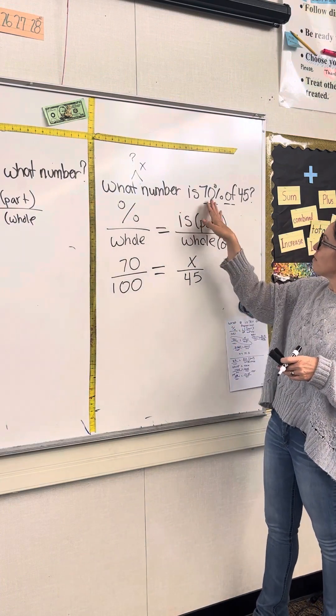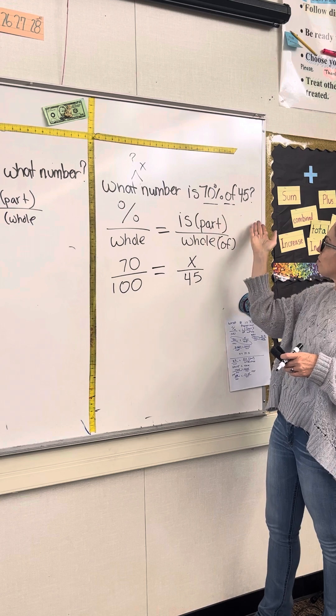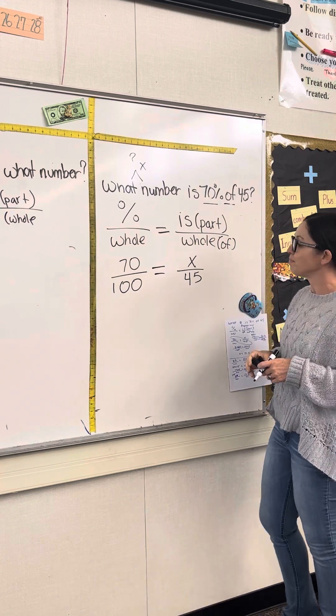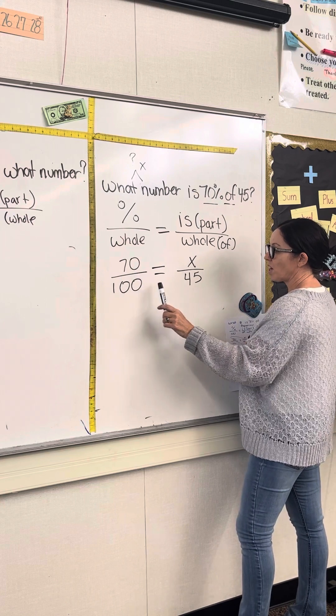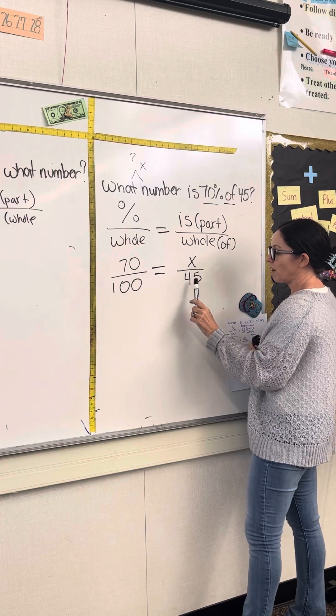What number is 70% of 45? So 70% out of 100 equals what of 45?